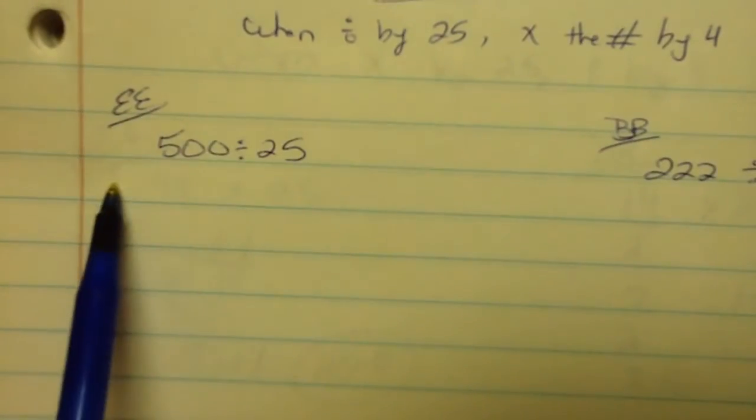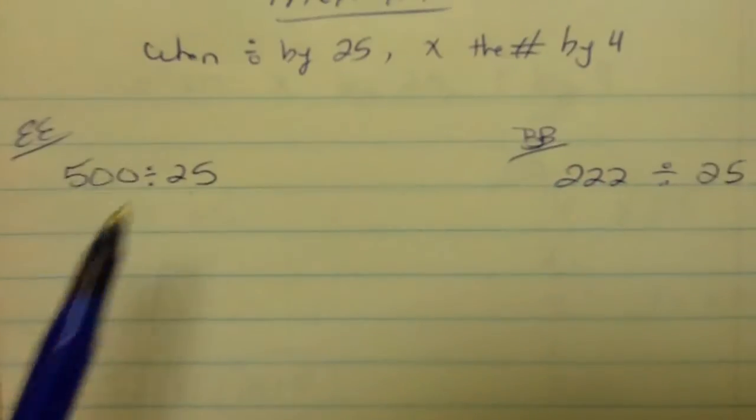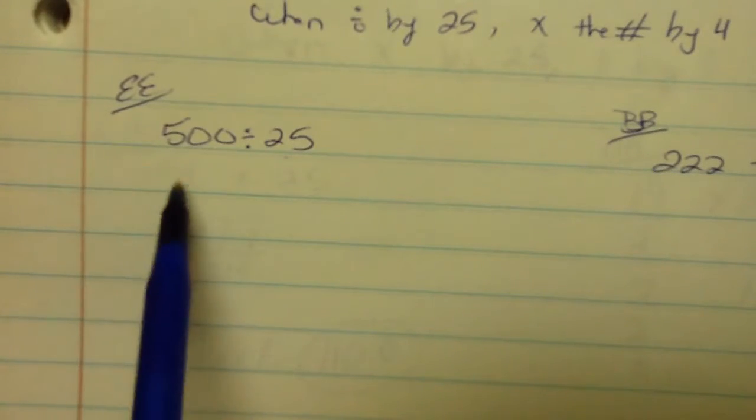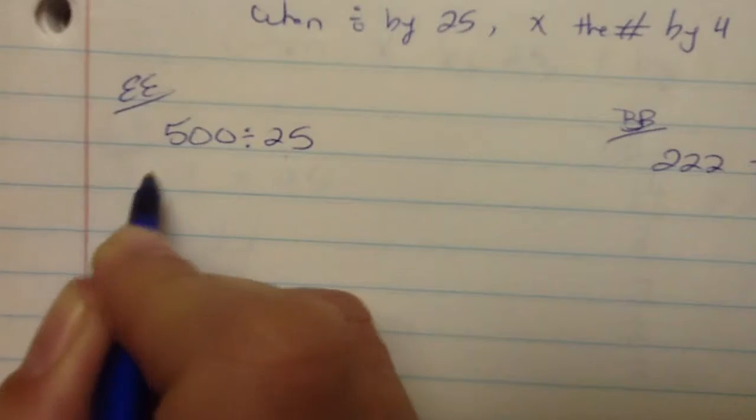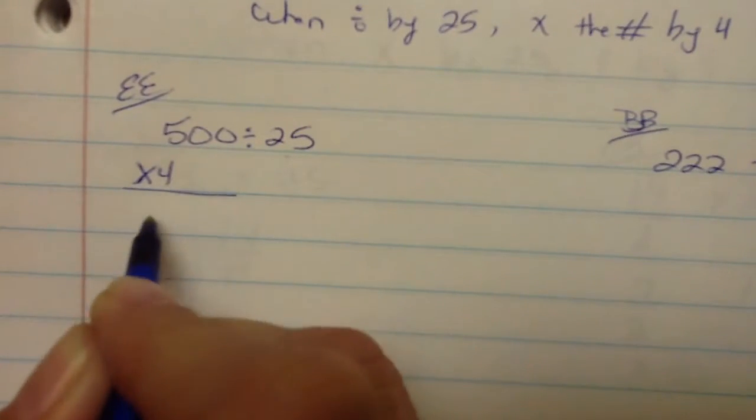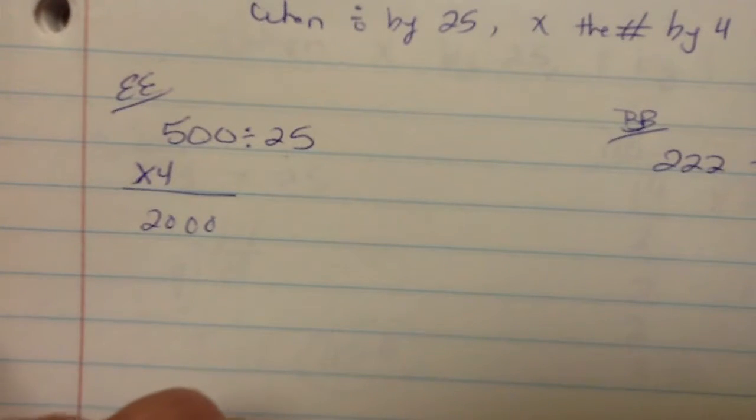So we have 500 divided by 25. Remember what we said, we can multiply by 4. So that means you're doing 500 times 4. Now that sounds like a big number to do in your head, but remember what I taught you about the zeros. If you do 5 times 4, that's easy, you can do that, it's 20. And then you can just bring down the other two zeros. That's 2,000.